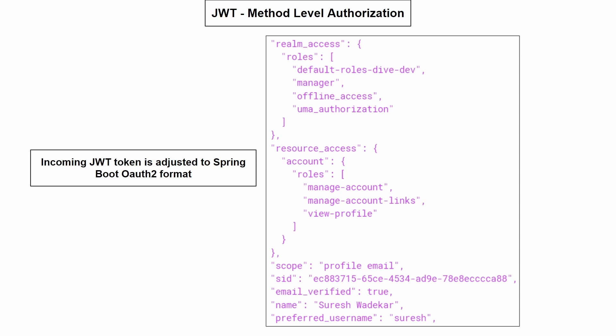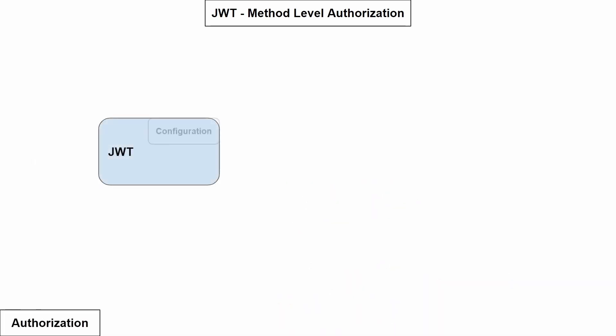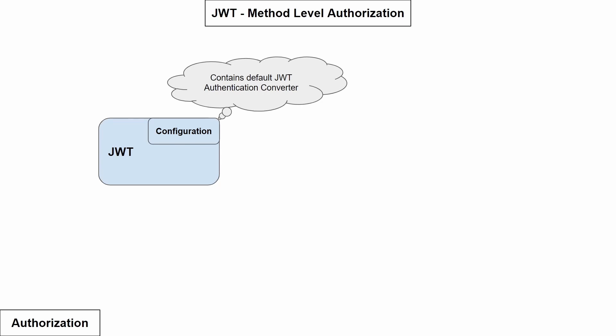The JWT has a configuration object which contains all the predefined default configurations, and within these default configurations there is a class that converts the incoming JWT access token from Keycloak to the Spring Boot specific format — that converter is the JwtAuthenticationConverter.